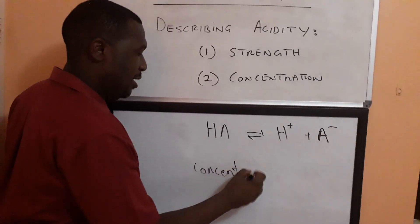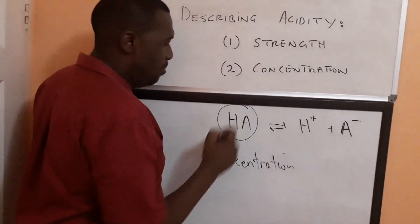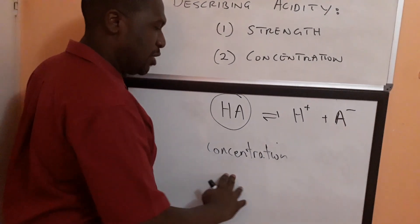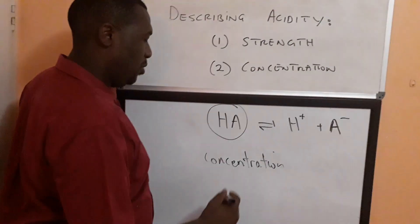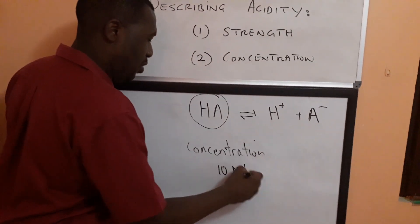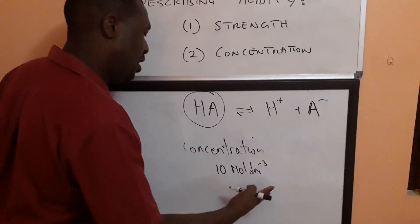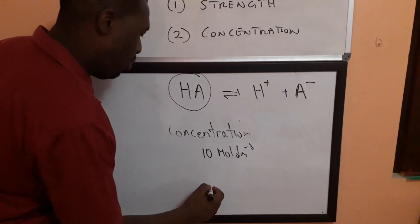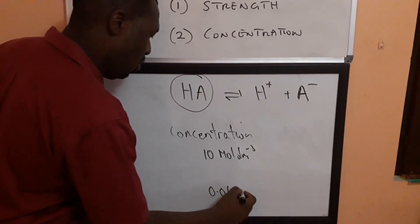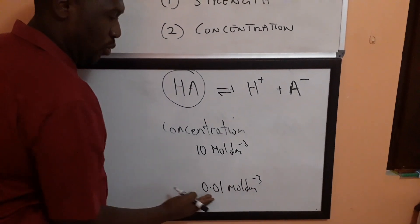Now concentration is different. Concentration has to do with how many molecules are actually in a certain volume of solution. So for example you might have a 10 mole per dm cube solution that would be described as concentrated versus a 0.01 mole per dm cube solution which would be taken as dilute.